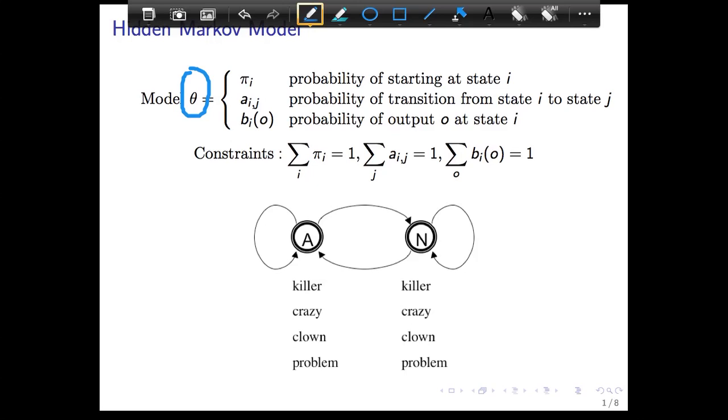As before, just to remind you, an HMM is described by this model theta, which is nothing but a collection of probabilities. There's one probability for each state to start at that state, a probability for each state of going to another state, and a probability of outputting an observation symbol at a state. These constraints make these probabilities sum to one, otherwise they won't be probabilities.